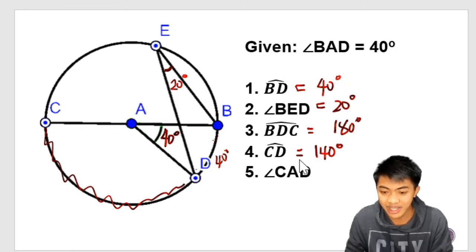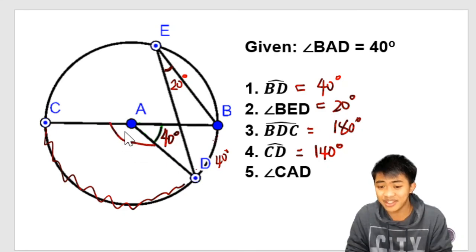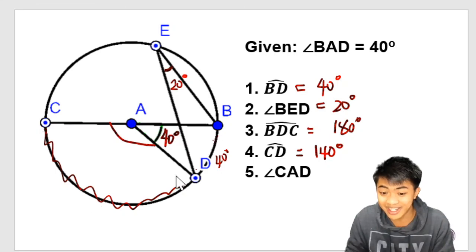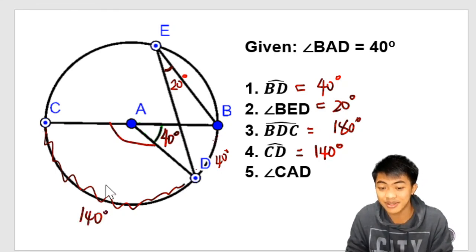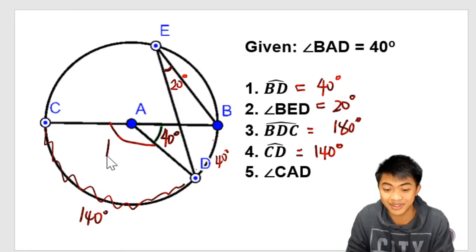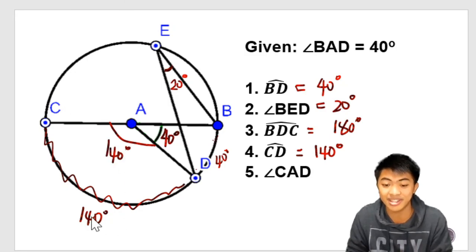So easy. And last but not the least, angle CAD. Angle CAD. So it is a central angle. And we know that its intercepted arc is 140 degrees. So yeah, we can conclude that this is also 140 degrees.